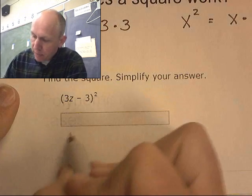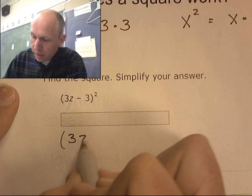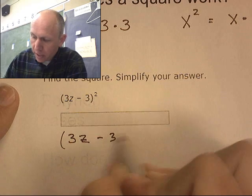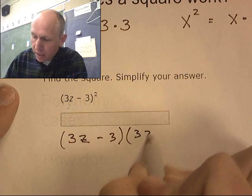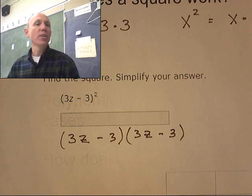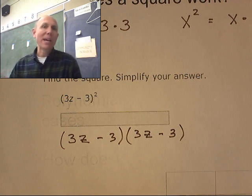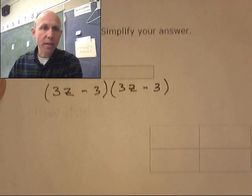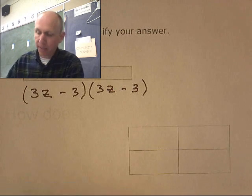3z minus 3 squared means I need to do (3z - 3) times (3z - 3). That's what the square is telling me to do. It's telling me to write it out twice and then multiply it. I have a box right here, so let's multiply this.